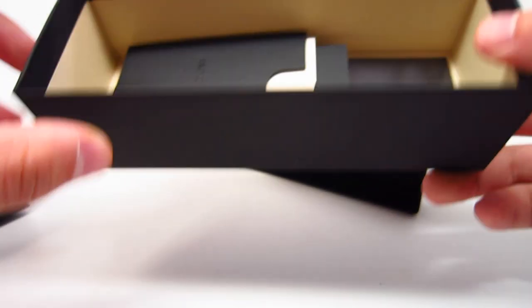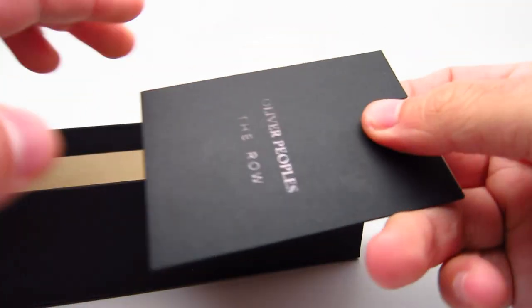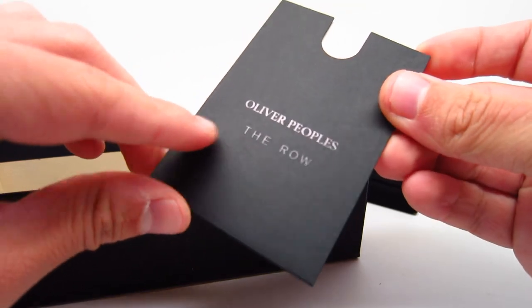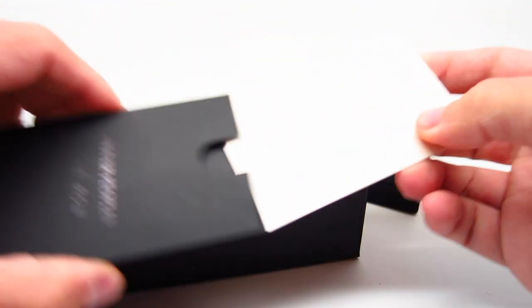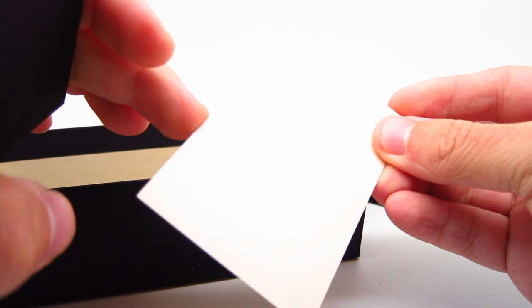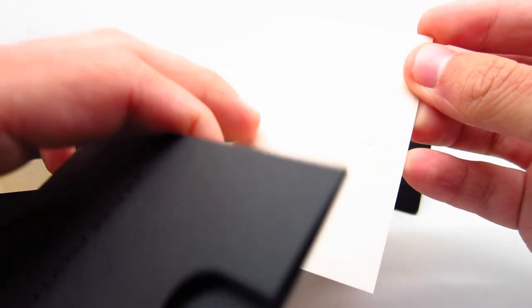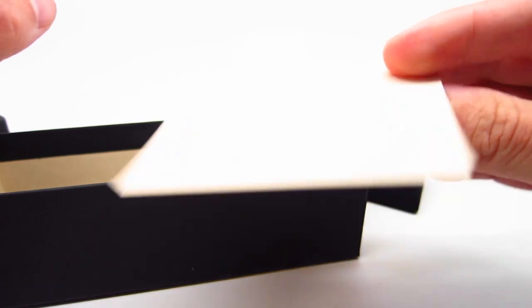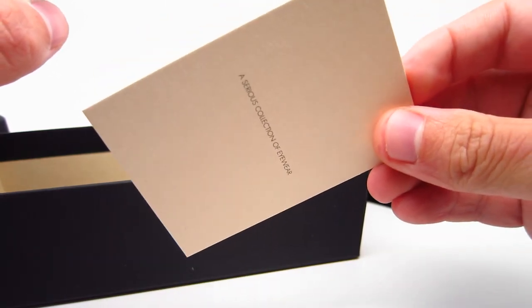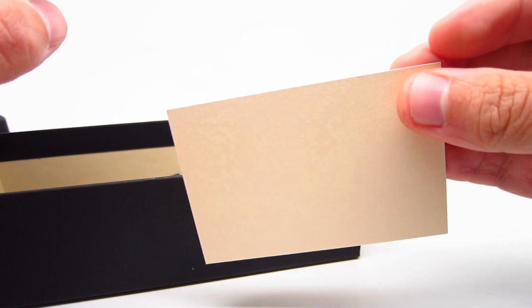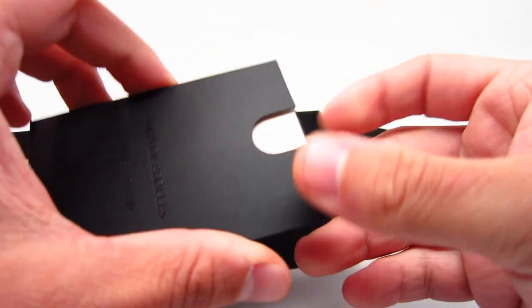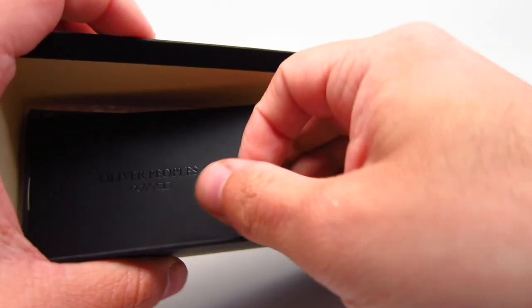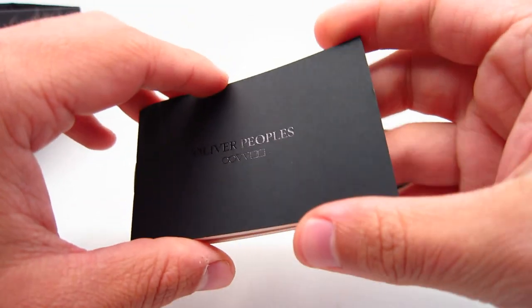So let's open this in a second. So what you get is this booklet. It says Oliver Peoples the roll. And inside you get, it says the Sears collection of eyewear. And seriously that's what it says. So I don't know what's too much fun of that one. It's not like the authenticity card or anything.